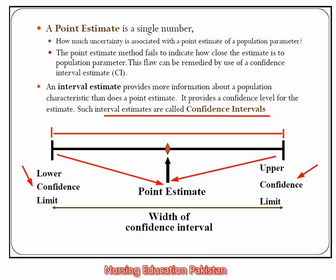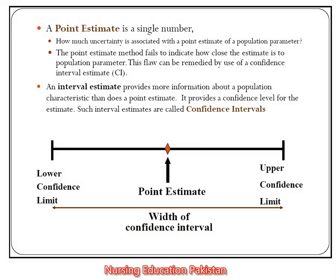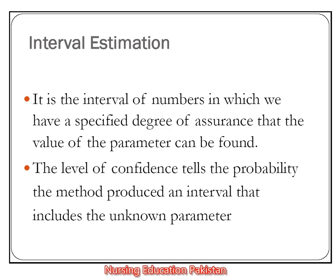The lower confidence limit and the upper confidence limit — the distance between them is what we call the width, and this width is the confidence interval. The interval estimate is described as two numbers where we are providing bounds to know the parameters. Our parameter of the population will fall in this range, and the level of confidence is the probability that the unknown parameter lies within this limit.